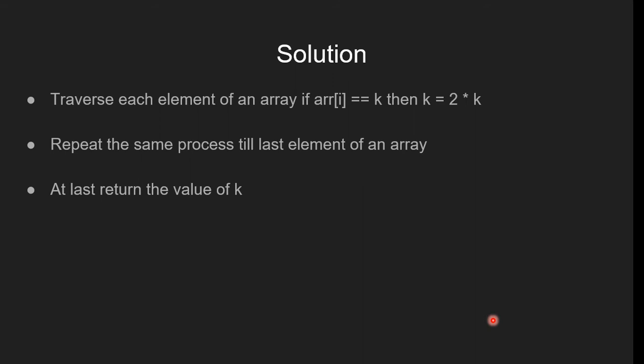Let's discuss the solution. First, we traverse each element of the array. If any element equals k, we double the value of k. We repeat this process until the last element of the array. Finally, we return the value of k.